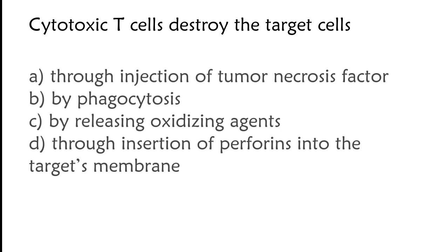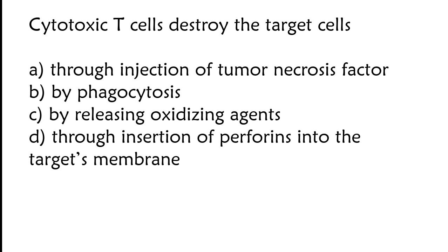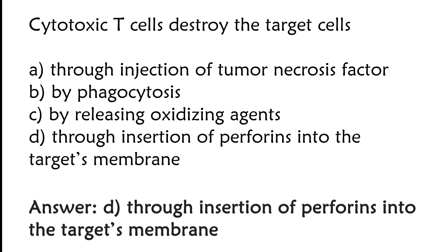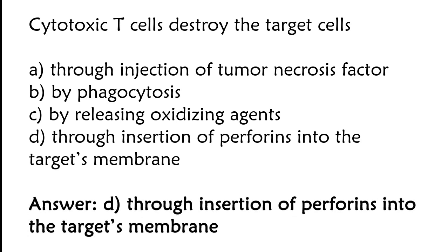Cytotoxic T cells destroy target cells through — options: injection of tumor necrosis factor, by phagocytosis, by releasing oxidizing agents, through insertion of perforins into the target's membrane. The correct answer is option D. Cytotoxic T cells destroy target cells through insertion of perforins into the target's membrane.